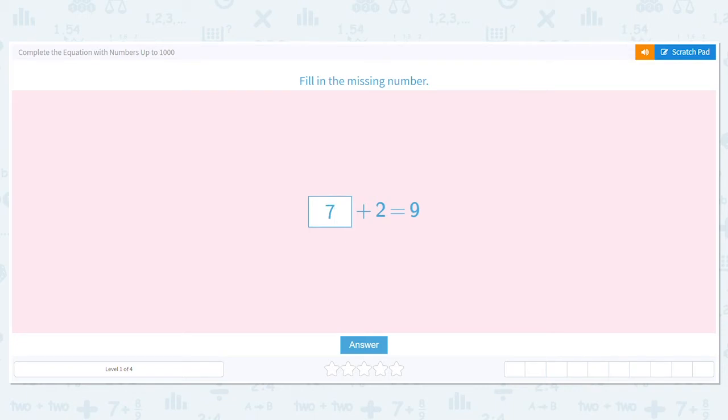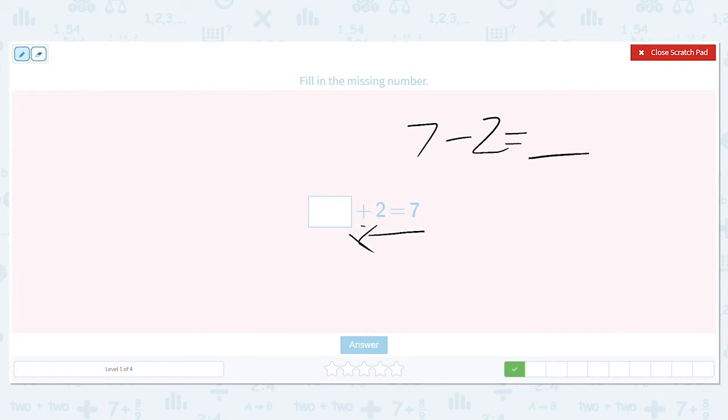We use our known facts to help us find missing facts. This time, blank plus 2 equals 7. So we're adding here, that means I can work backwards and use subtraction. So I will go 7 minus 2 equals what? 7 minus 2 is 5. So that means 5 goes in that box. And is 5 plus 2, 7? It is.